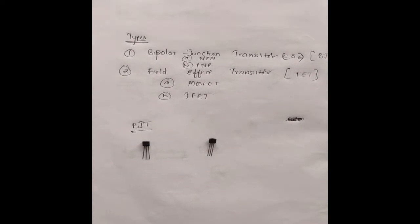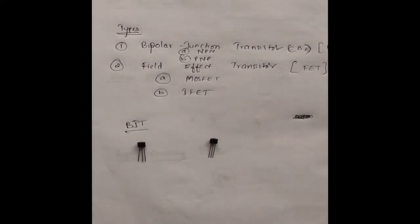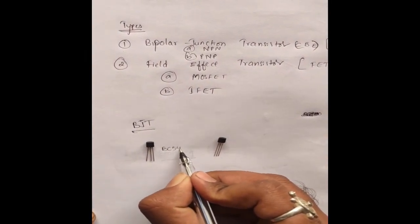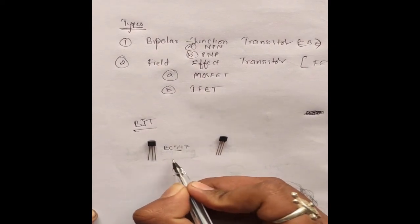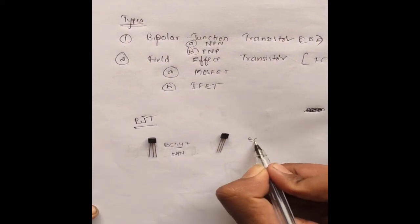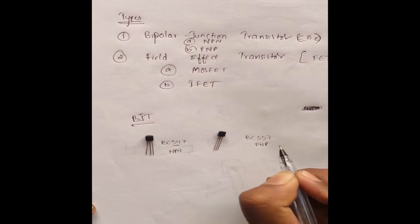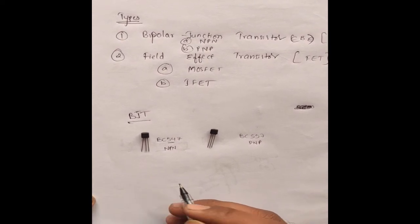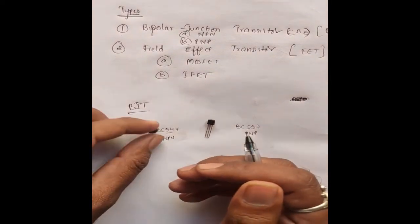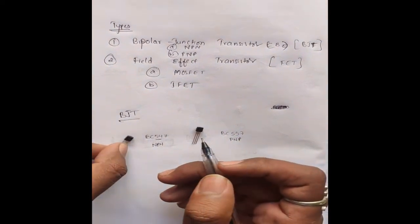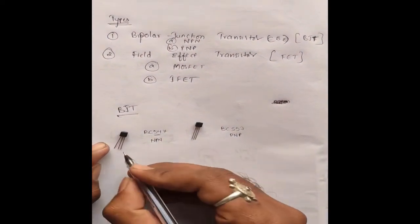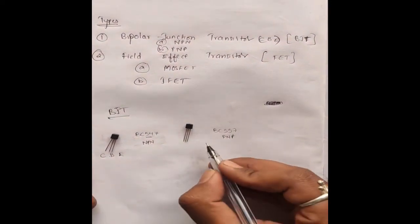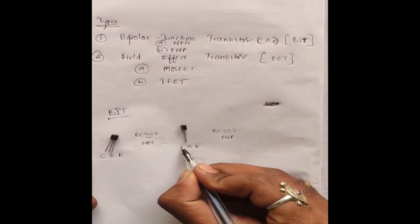To identify between NPN and PNP transistors, there is a number written on them. If the number series starts with BC547, it indicates an NPN transistor, whereas BC557 indicates a PNP transistor. Both types have three terminals: emitter, base, and collector. By keeping the flat side with the number facing us, the right terminal is emitter, middle is base, and left is collector. The same notation applies for PNP transistors.